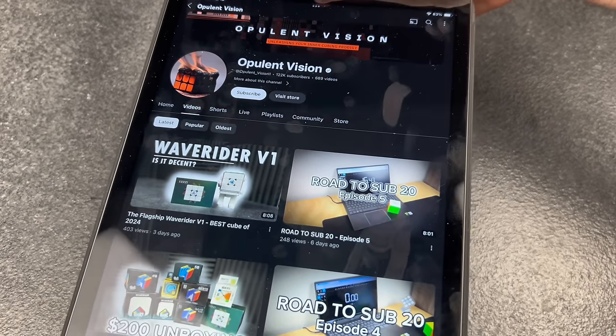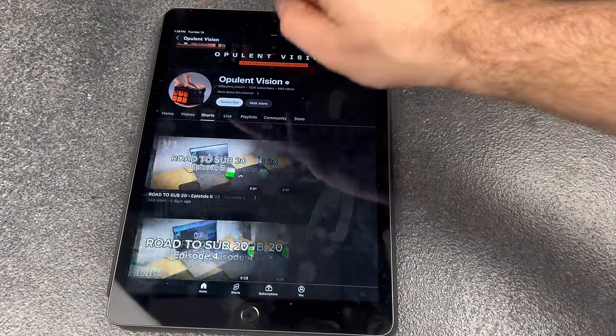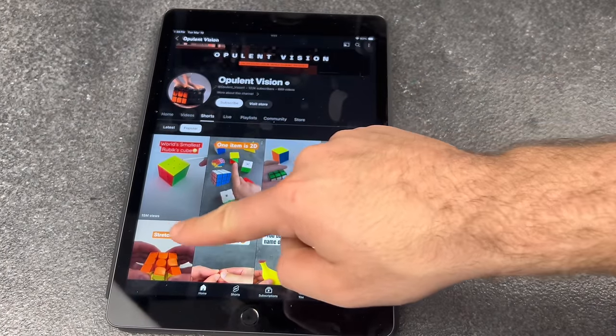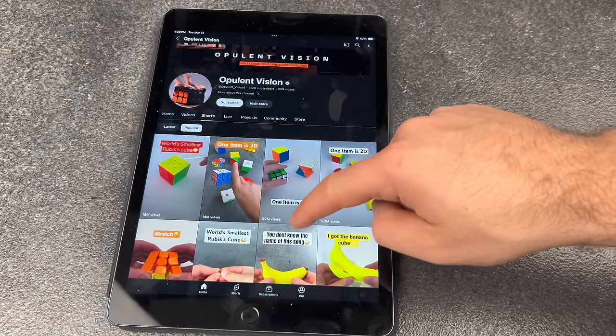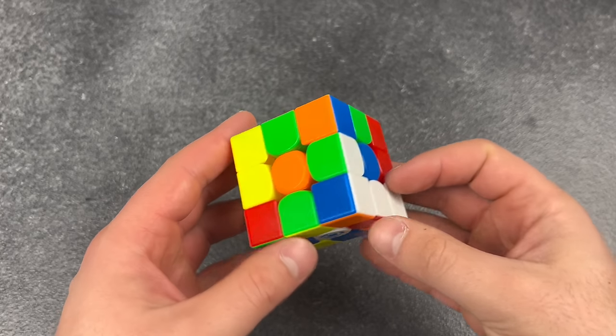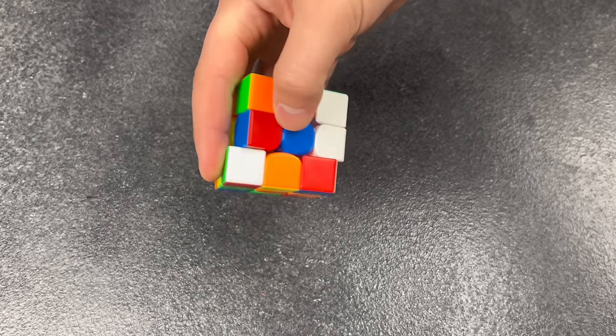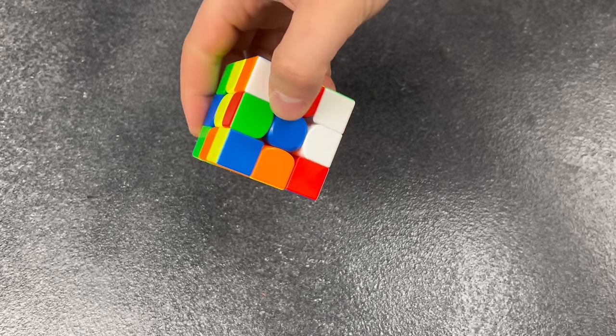How do you have 122,000 subscribers when you only get a couple hundred views on your videos? Put that crap down, let me show you. 15 million views, 14 million views, 7 million views. I saw this on YouTube once. I know how to solve those, give me that. Okay, I saw this on YouTube once. R2 D2 R2 D2. Three hours later.